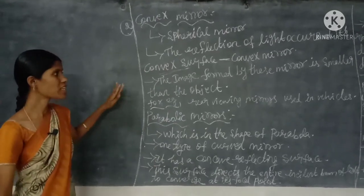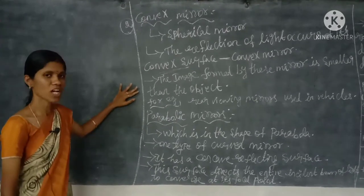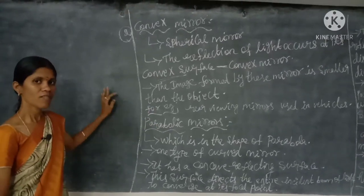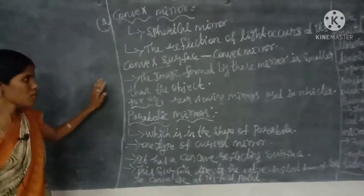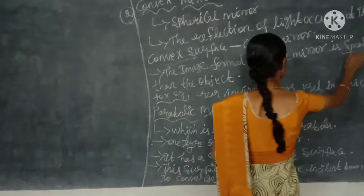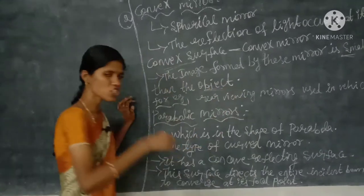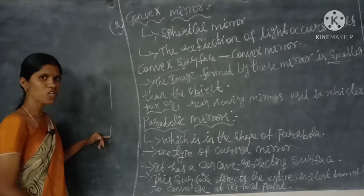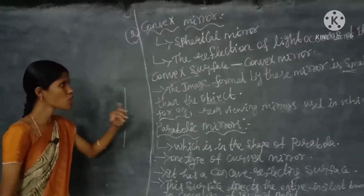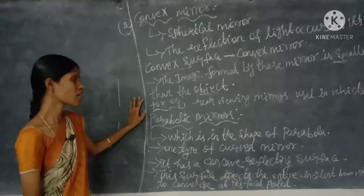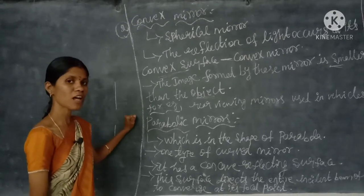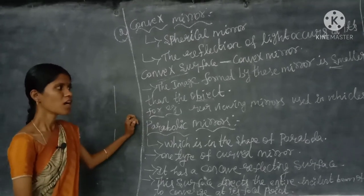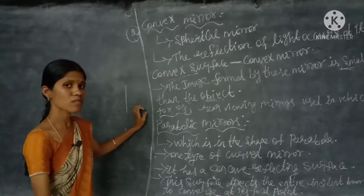The image formed by a convex mirror is smaller than that of the original object. The product image will be shorter than the original image size. For example, the rear-view mirrors used in vehicles are an example of a convex mirror.